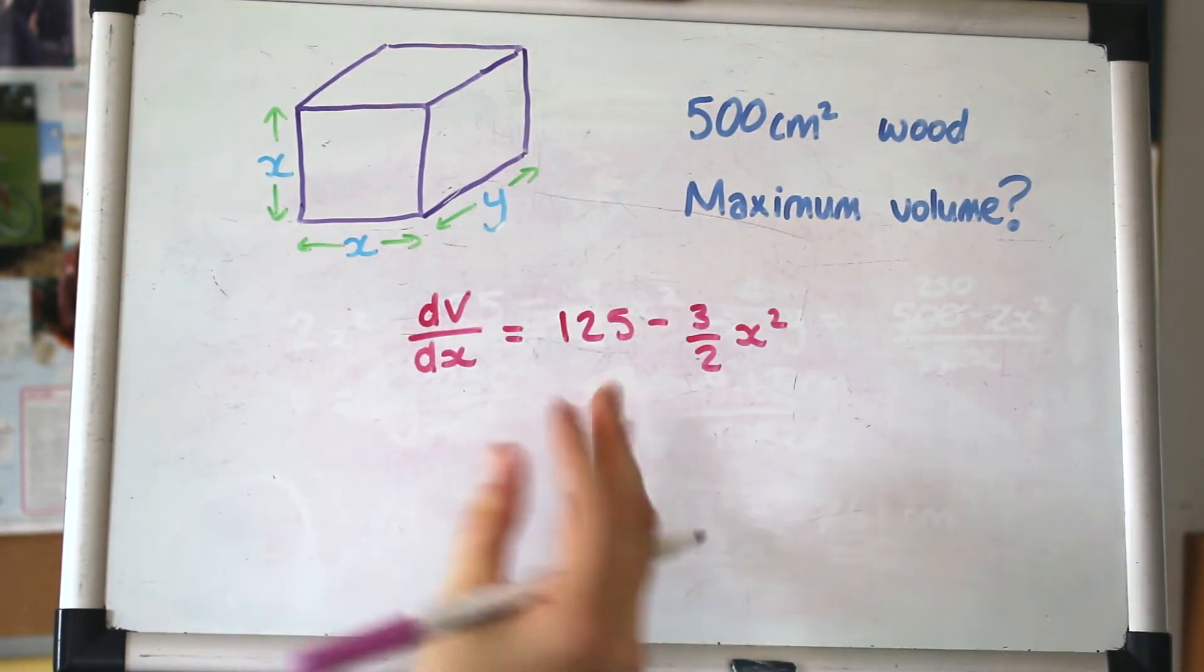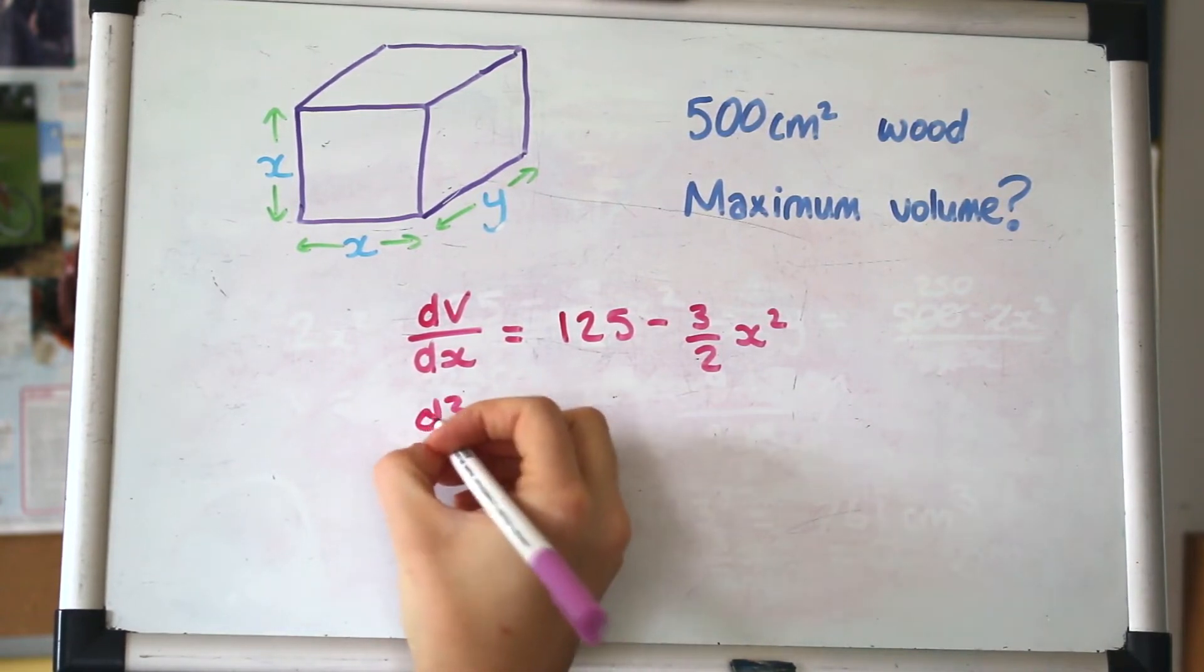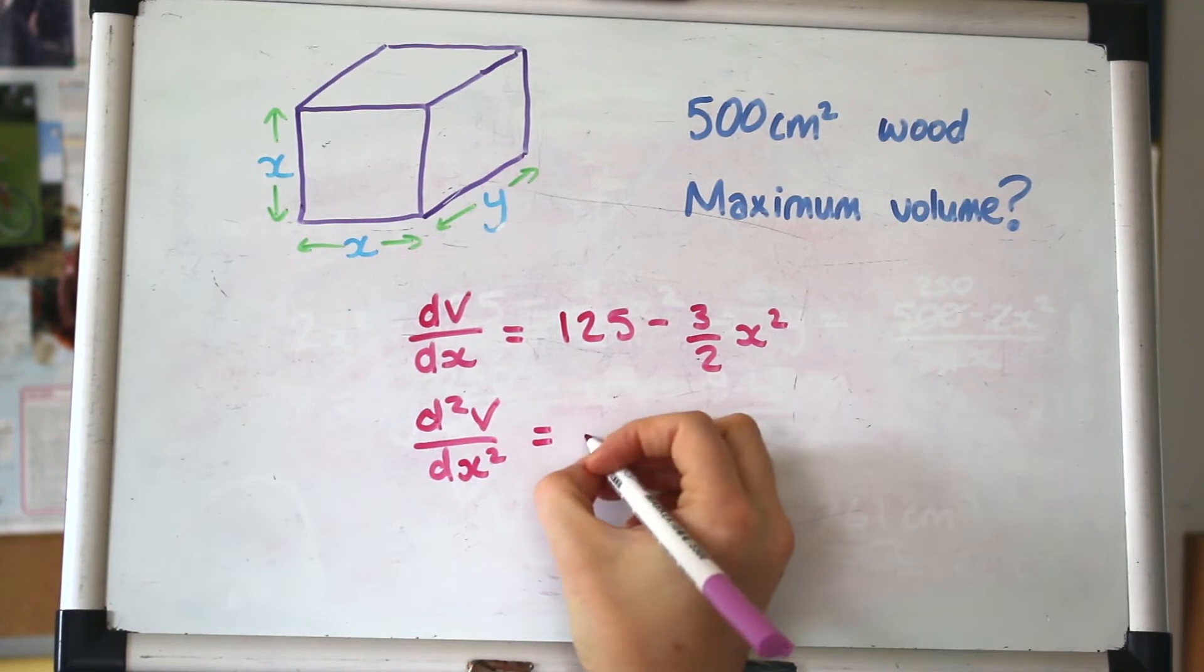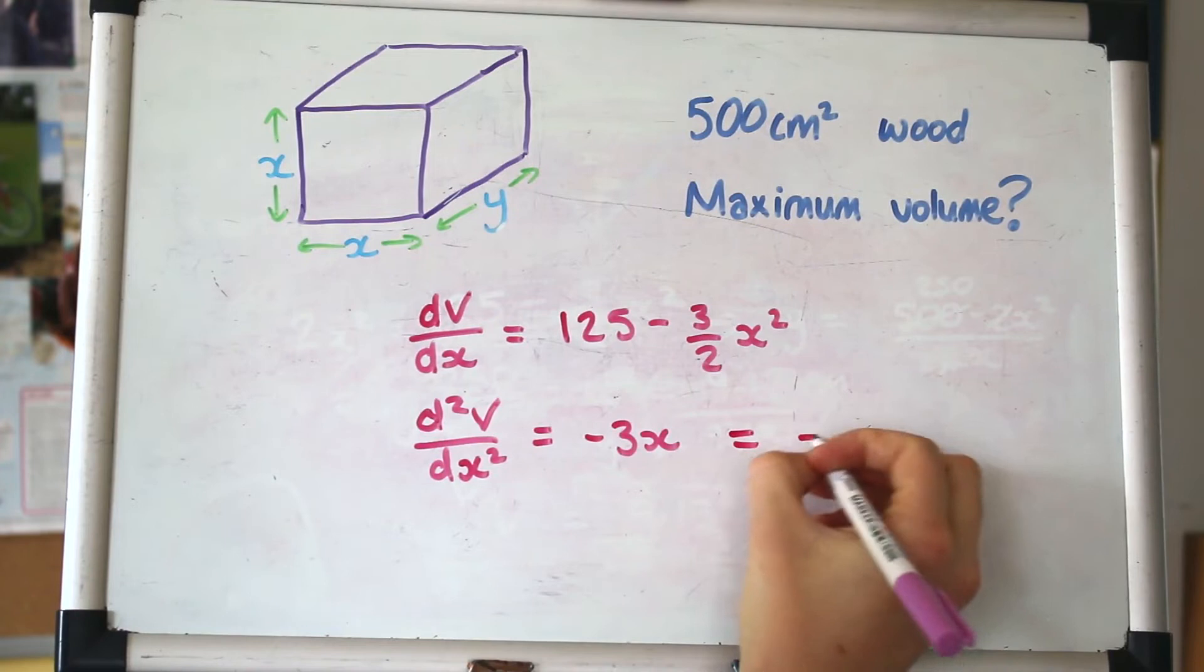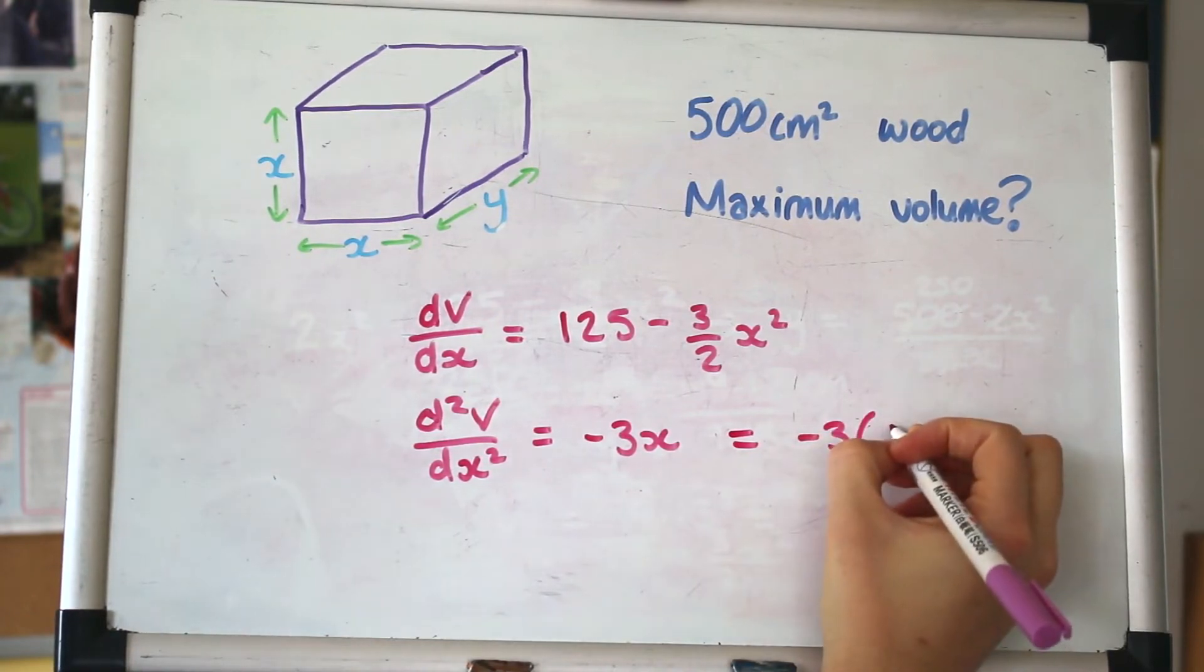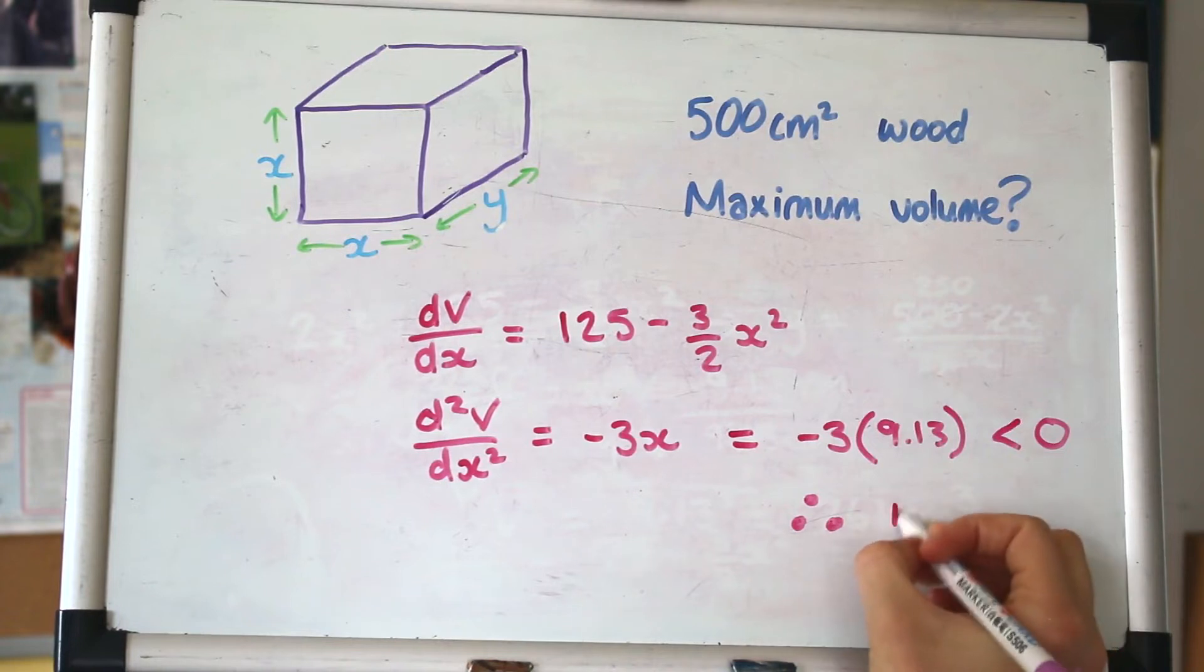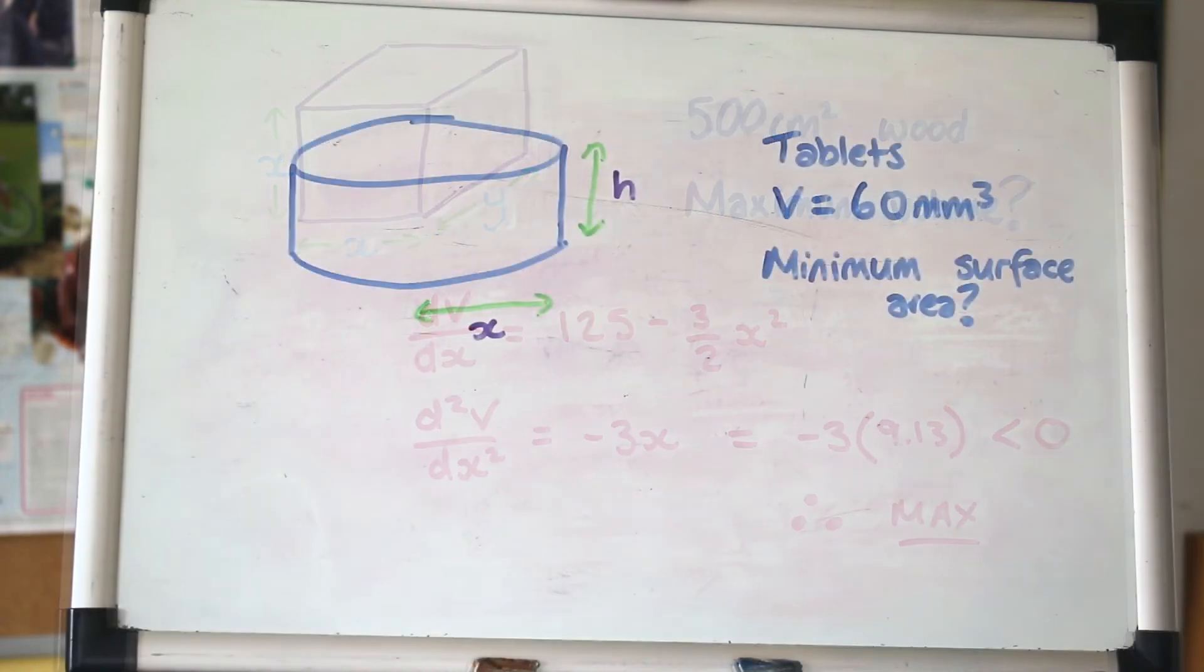To show that a value gives you a maximum or minimum, you take the second derivative. We differentiate dV/dx again to get d²V/dx² = -3x. If you put your value of x in here, 9.13, you'll get a negative value. If it's negative, that means it's a maximum. A negative value is the maximum, a positive value is the minimum. That's how you prove it's definitely a maximum.